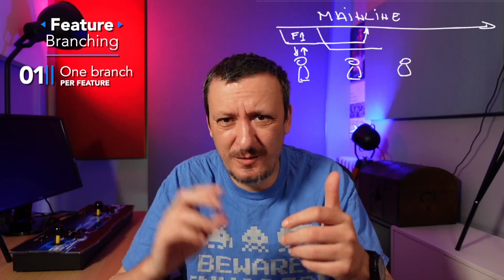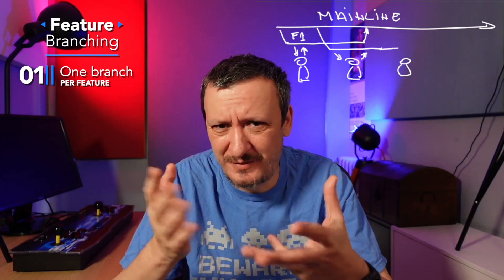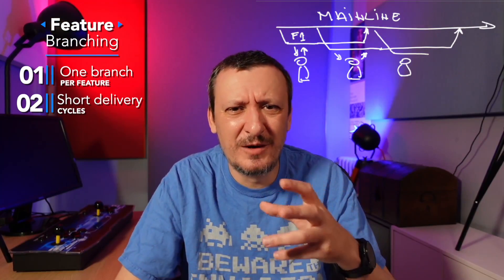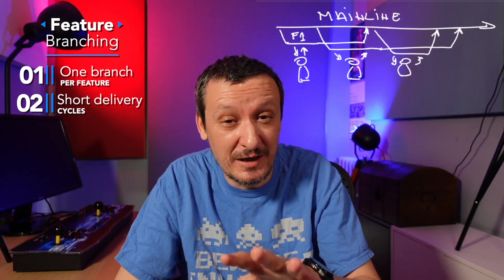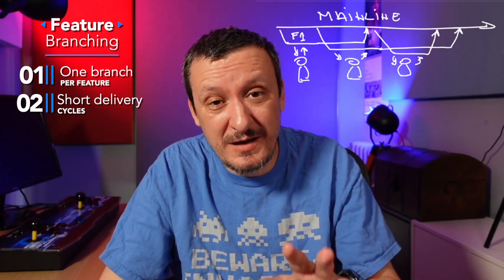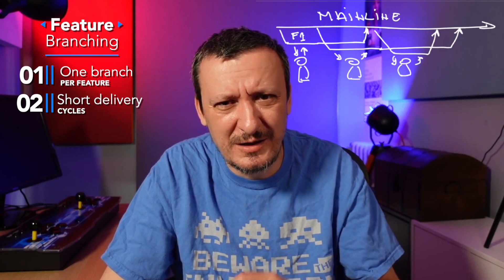The important thing about feature branching is that we work on very small chunks and have very short delivery cycles. Typically a team working with feature branches would finish within a day or even a few hours — code is written, tests are written, pull request is created, reviewed, confirmed, and approved, and that something is back to the mainline. When using feature branches, we are typically doing continuous delivery or continuous integration.